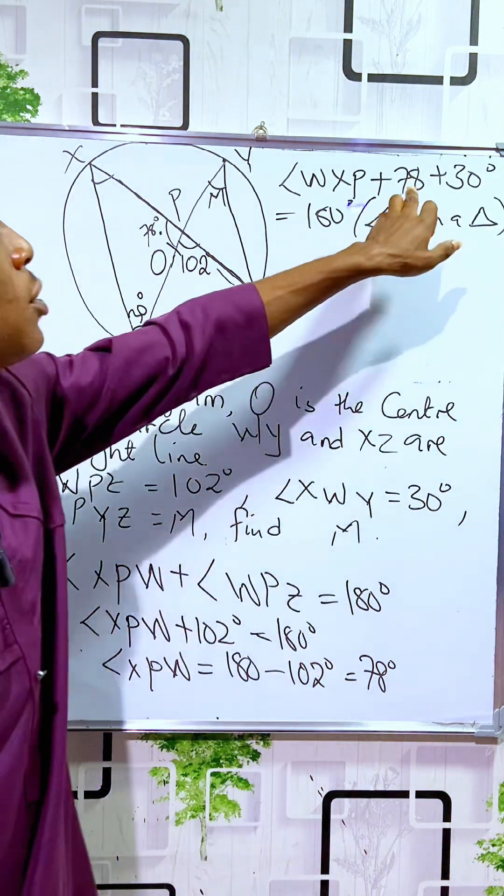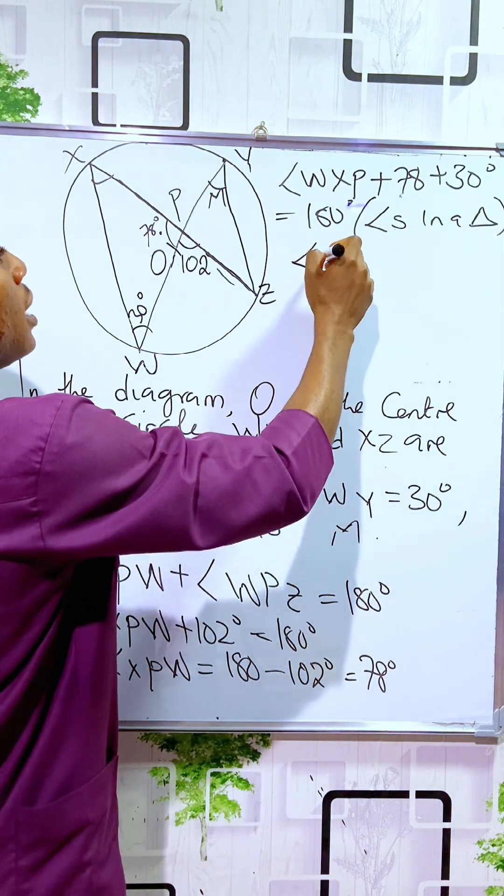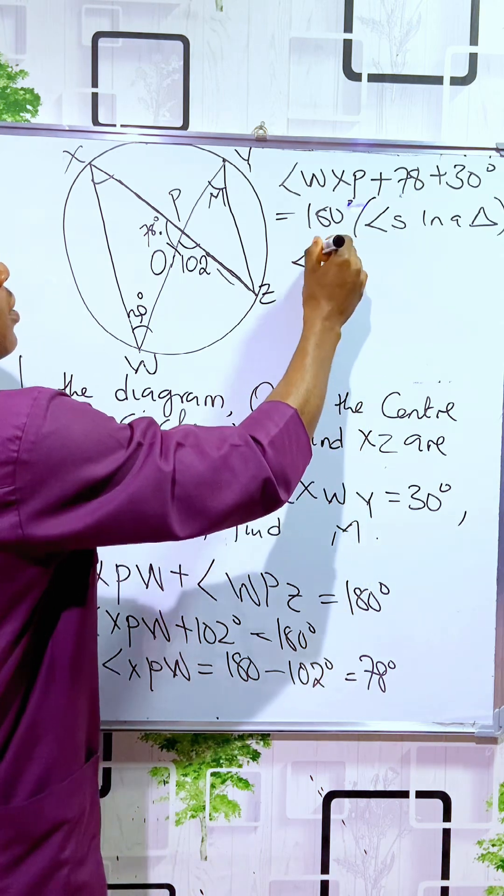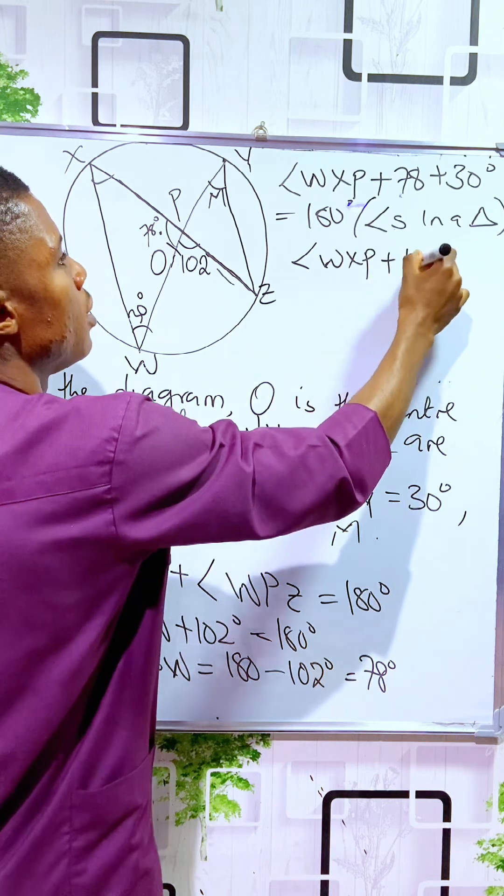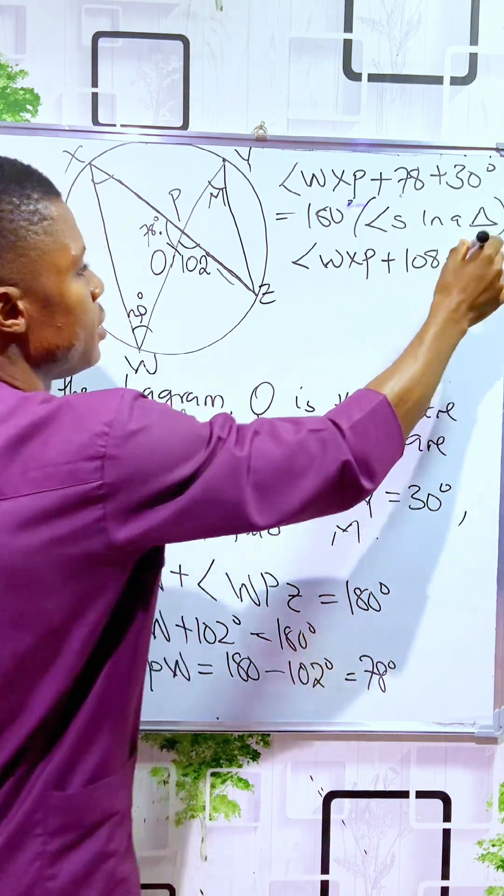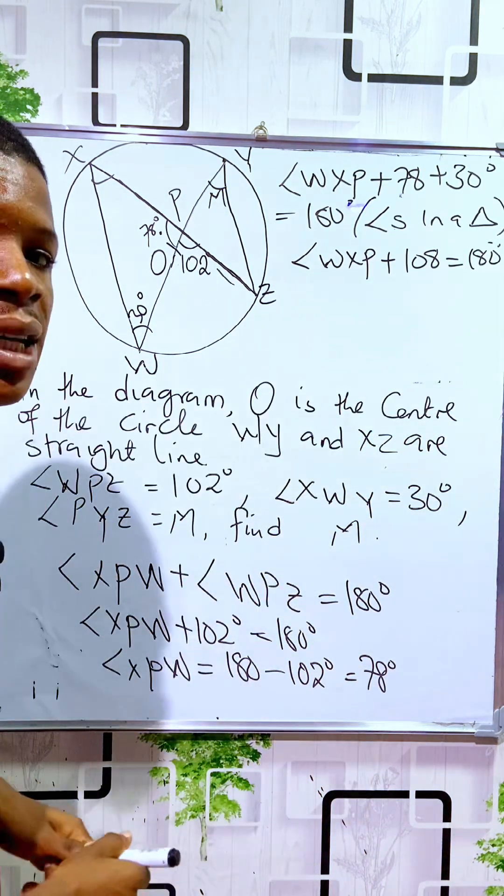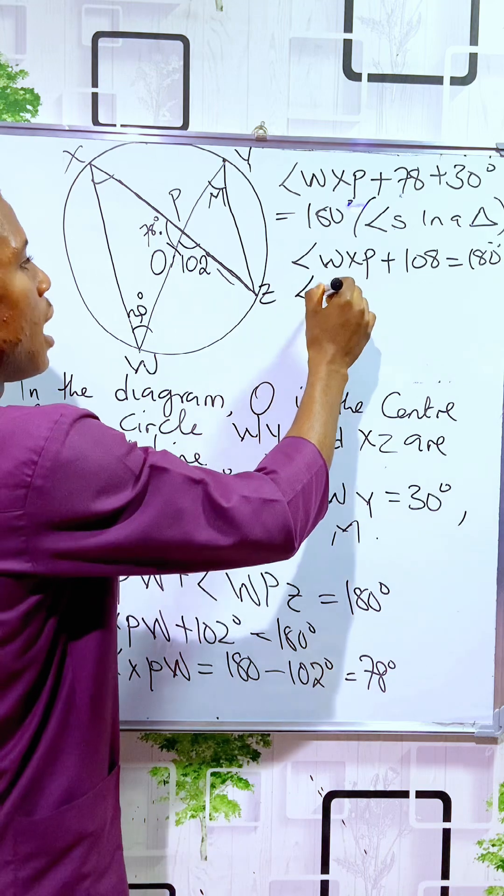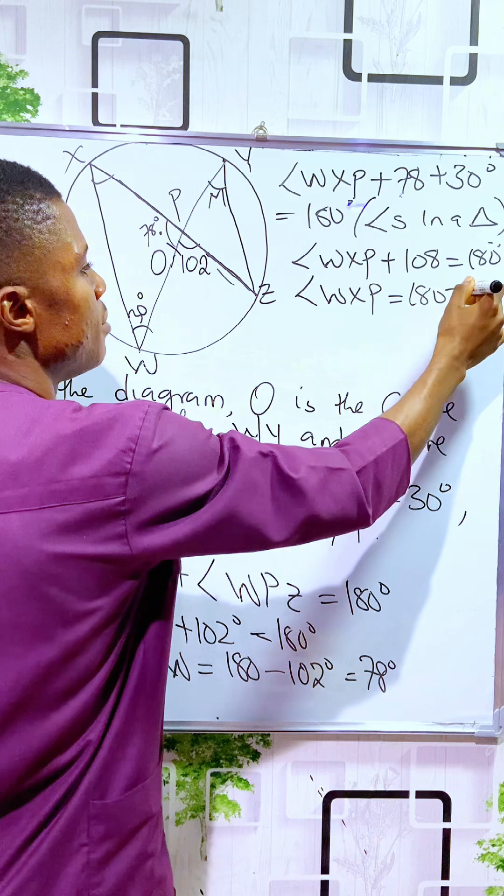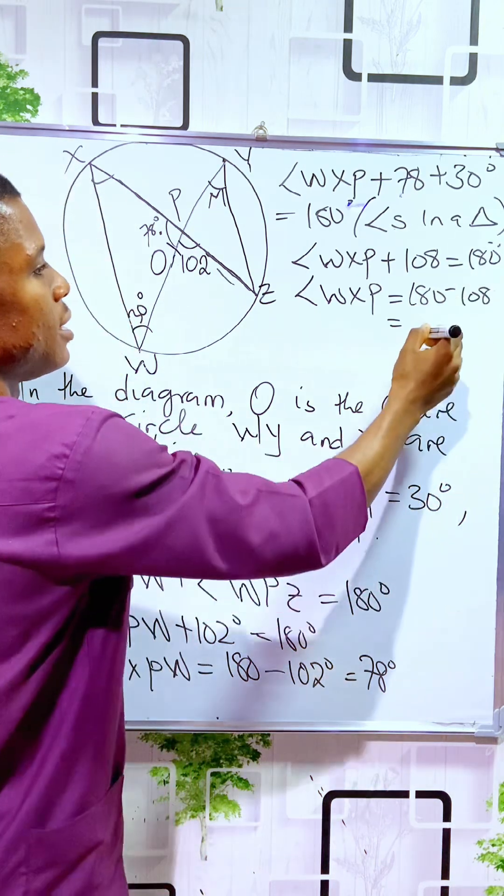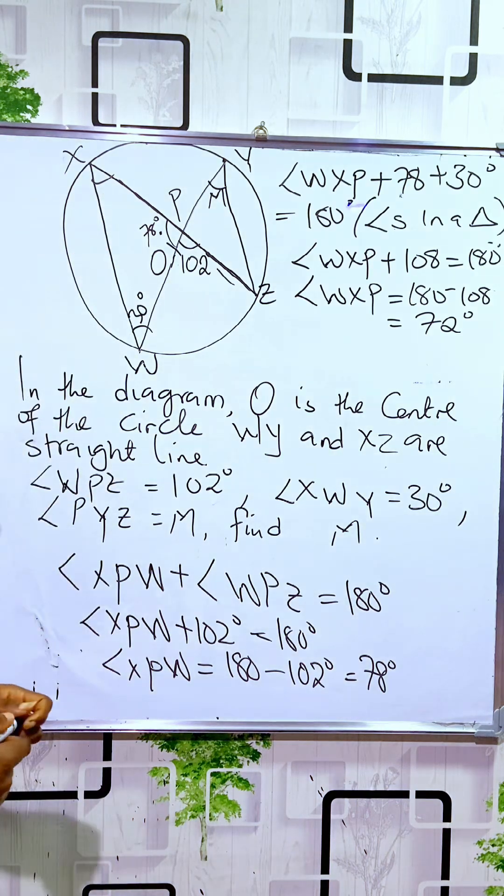Adding 78 and 30 gives us 108. So angle WXP plus 108 equals 180 degrees. Therefore, angle WXP equals 180 minus 108, which is 72 degrees.